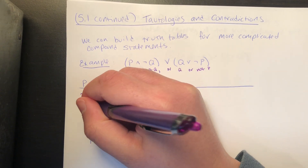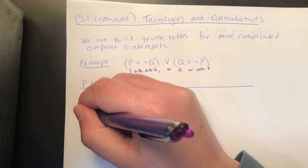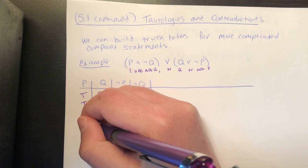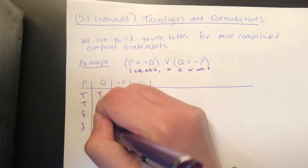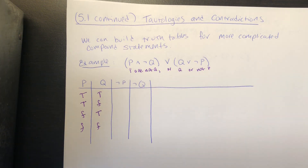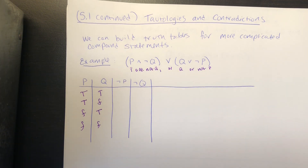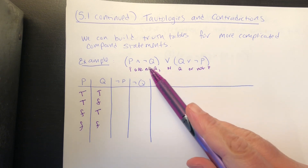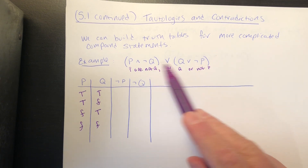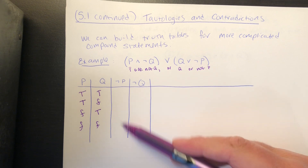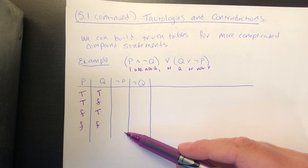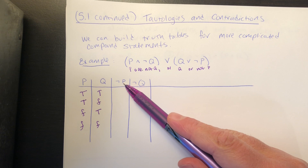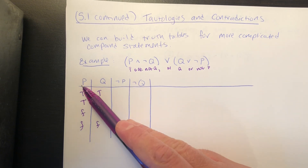Either they're both true, or one is true and one is false, or the reverse — the first is false and the second is true — or they're both false. So we can build up to this statement working from the inside out. I know I'm going to need the truth values of not p and not q, so I'm going to fill out the column for not p first. The negation of p has the opposite truth value of p.